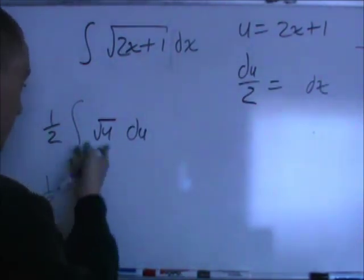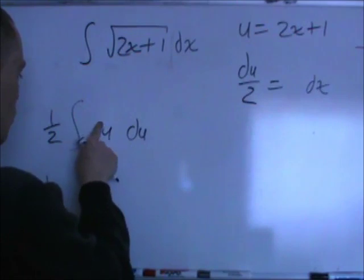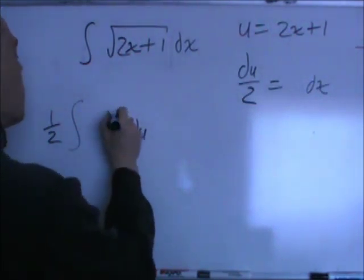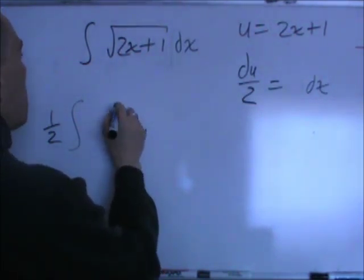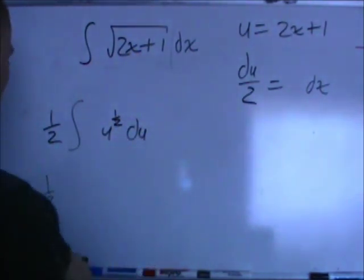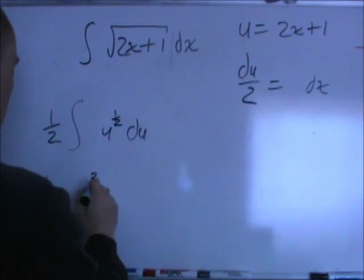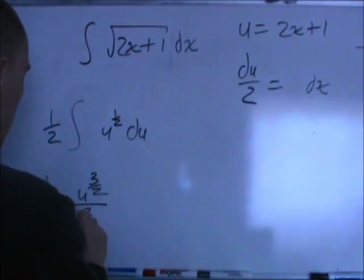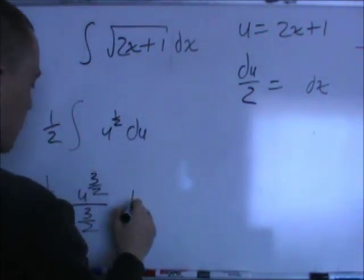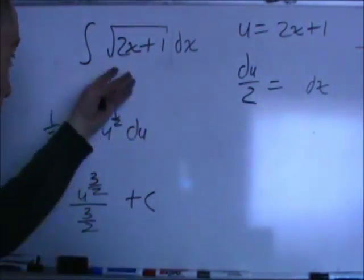Just 1 half, integrate that. I'm going to change this to a power. Yes, okay. So, add 1 to it, divide by the new thing, so that's going to be u to the 3 halves, divided by 3 halves, plus c. This is an indefinite integral after all.